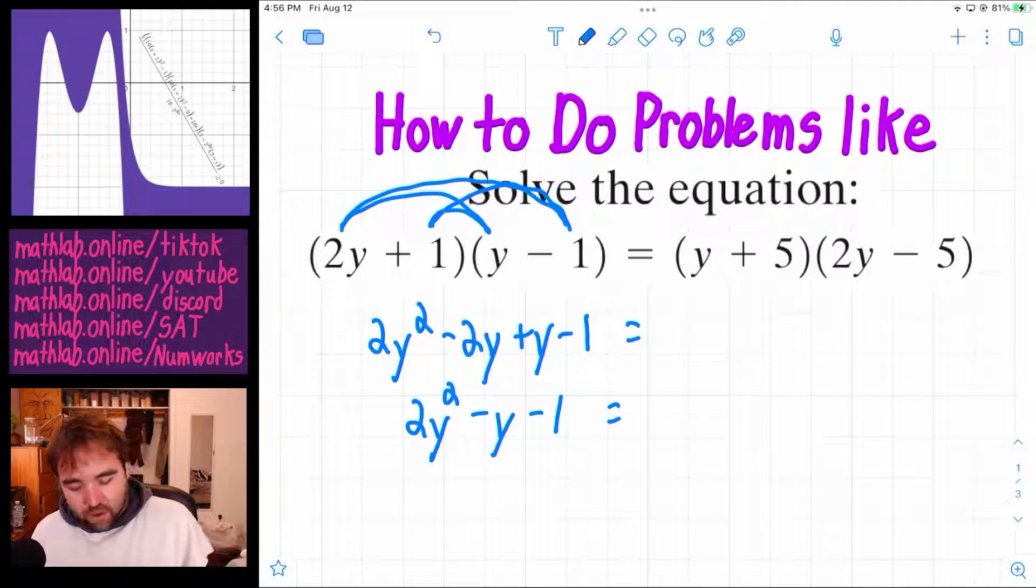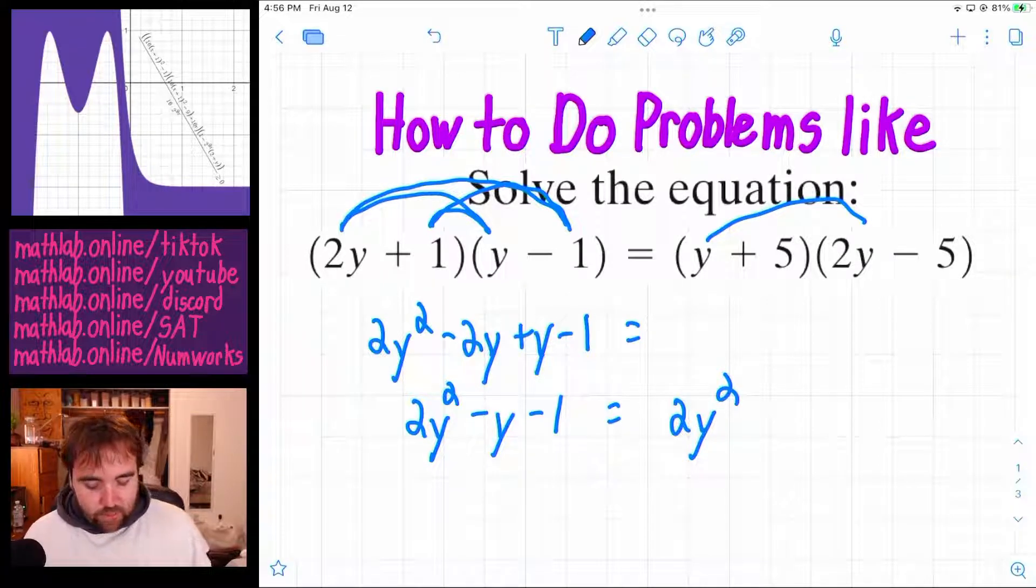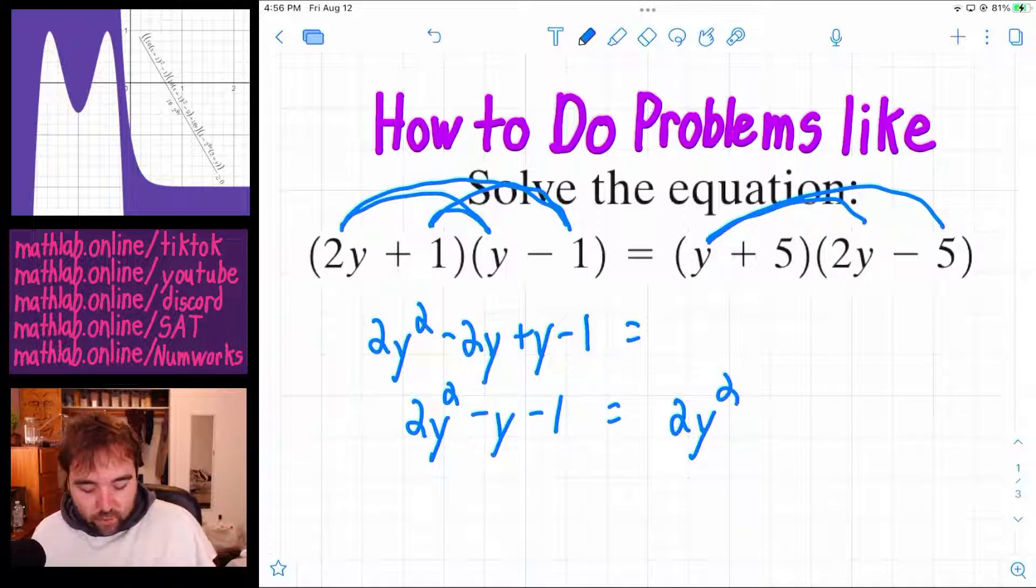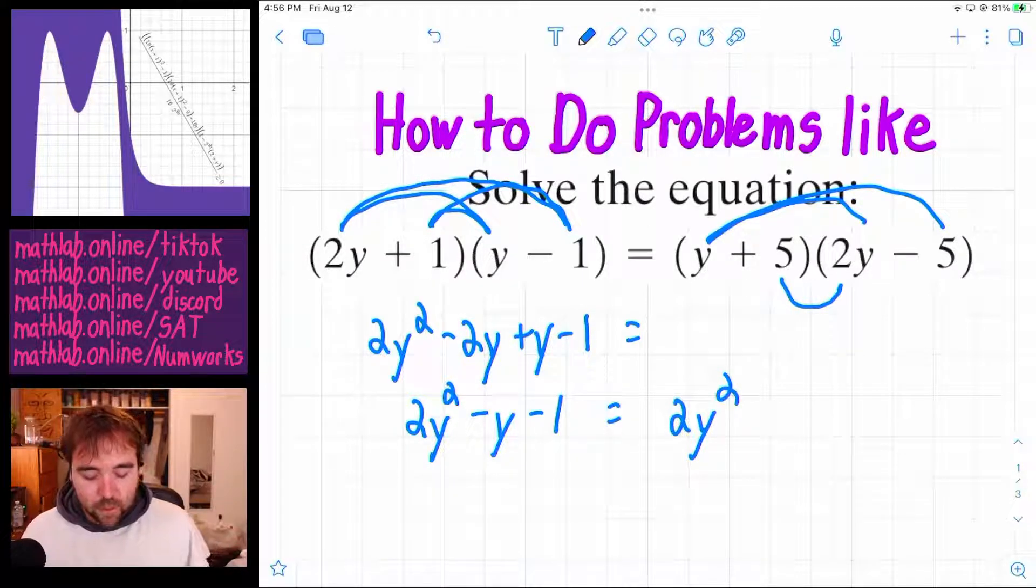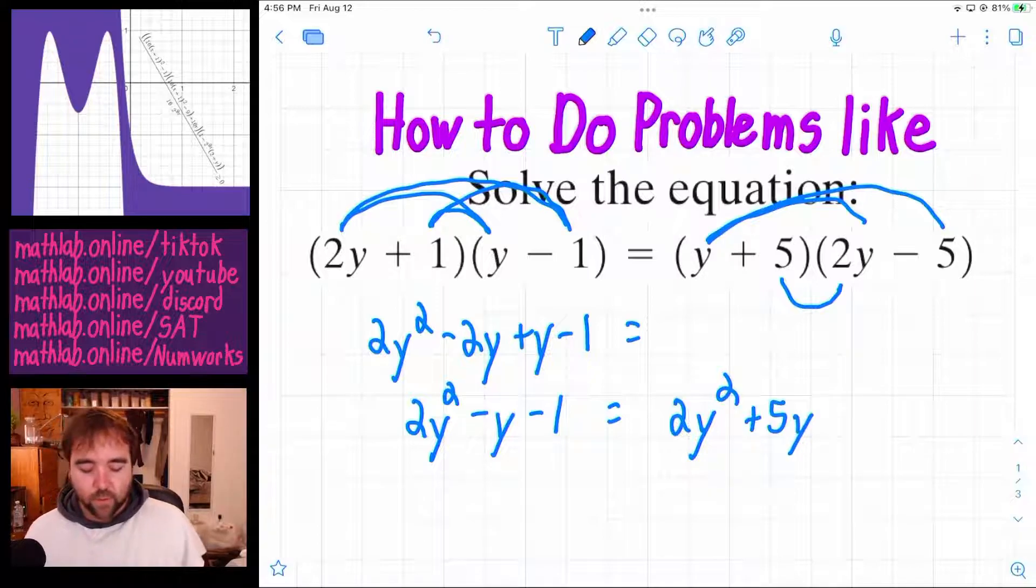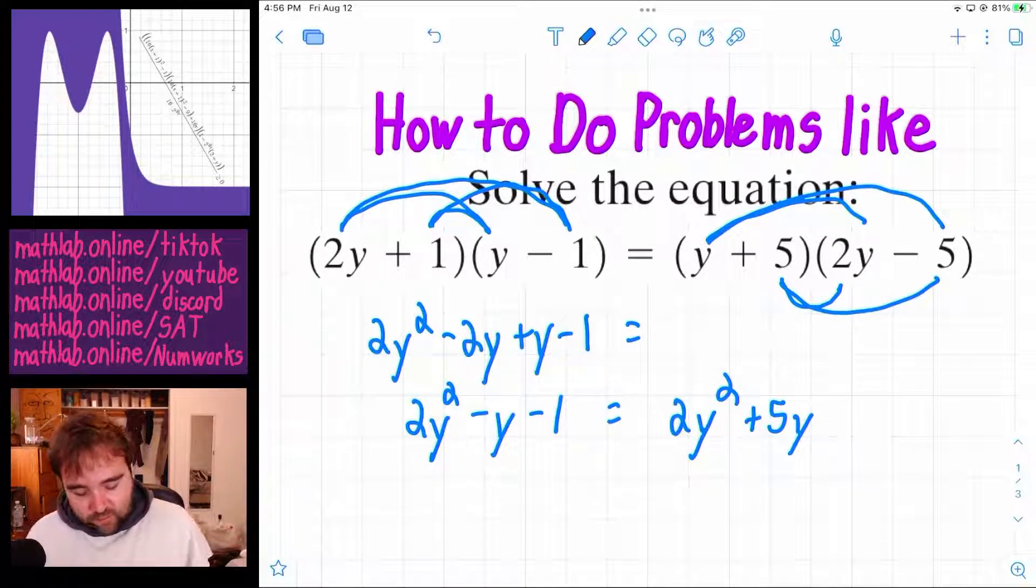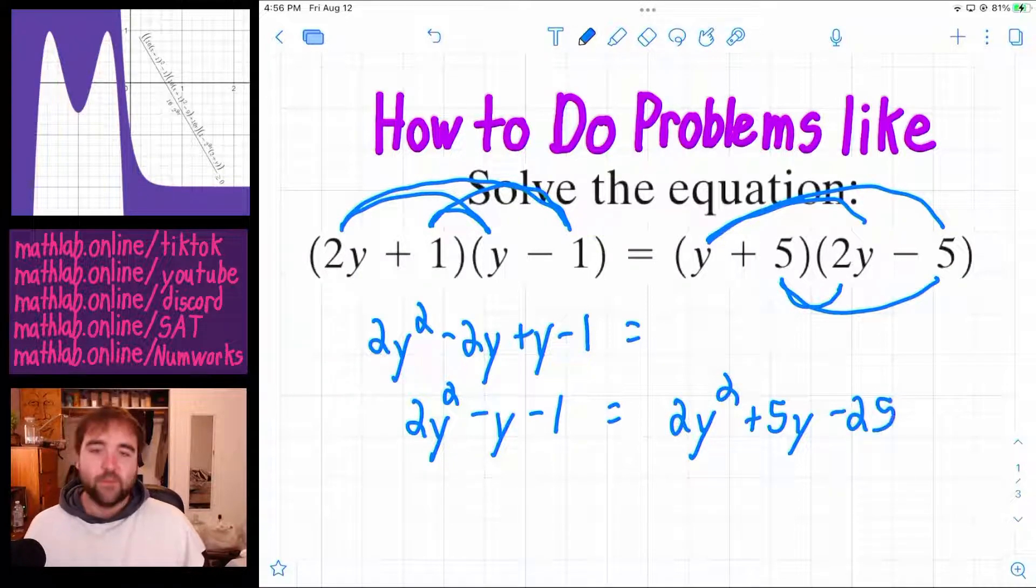So we're going to have the y times the 2y. So that's 2y squared. And then we're going to have the y times the negative 5, so negative 5y. And then 5 times 2y, so 10y. So negative 5y plus 10y is plus 5y.